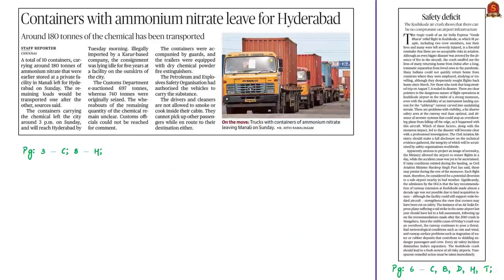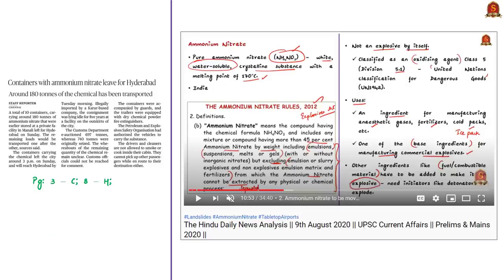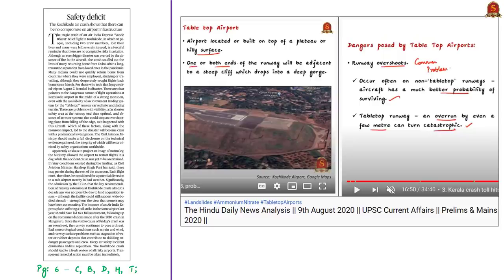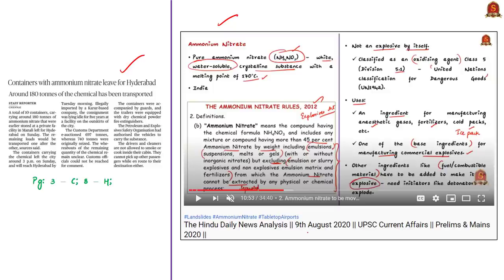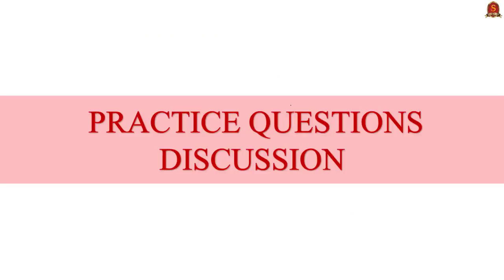The next two items — one about ammonium nitrate and an editorial about the recent air crash at Kozhikode International Airport in Kerala — were discussed in yesterday's analysis. We request viewers to look at yesterday's analysis for both these news articles. Try to have a basic understanding of both. Now let us move on to the practice questions discussion session.